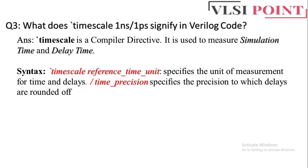The time unit represents the basic time increment used in simulation — it determines the duration of each time step. In this case, 1 nanosecond means each time step represents one nanosecond of simulation time. The time precision represents the smallest time resolution; it determines the accuracy with which time values are represented. Here, 1 picosecond means the simulation can represent time values with a precision of one picosecond.